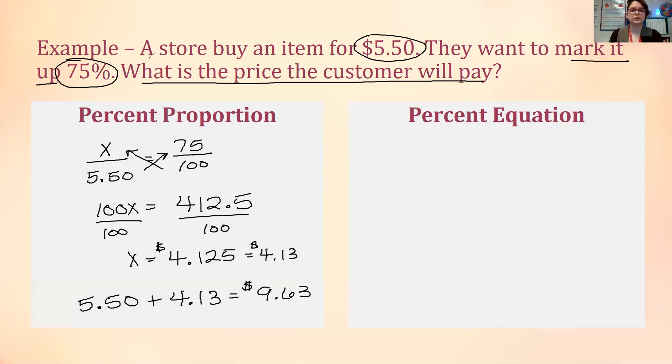With the percent equation we do the same thing. We represent our whole as 100% which we turn into a decimal or just 1. Then we need our markup amount which is 75% which will give us 0.75. Because it's markup we're adding, so this will be 1.75 and then times our original amount so the $5.50. So 1.75 times 5.50 gives us 9.625. Again we're dealing with money so we have to round. The two looks at the five tells it to round up to a three so $9.63.